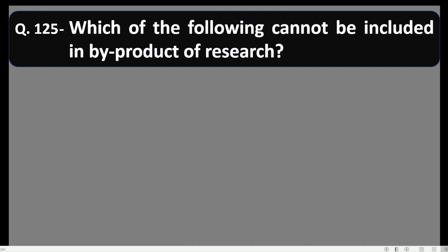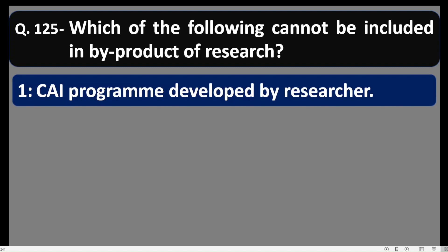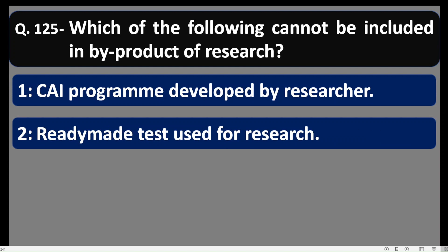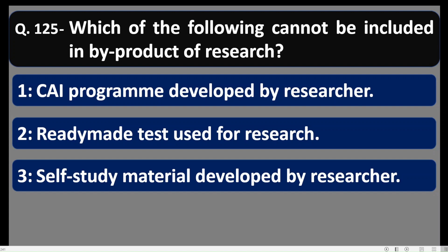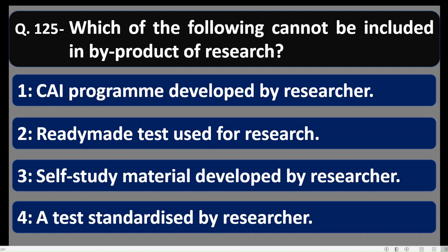Question number 125: Which of the following cannot be included as a by-product of research? Options include: 1) a program developed by the researcher, 2) a ready-made test used for research, 3) self-study material developed by the researcher, 4) a test standardized by the researcher. Option 2 is correct — a ready-made test used for research cannot be a by-product because it was developed by somebody else.